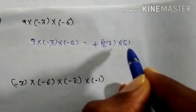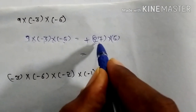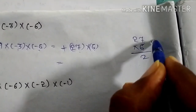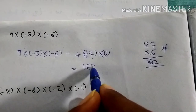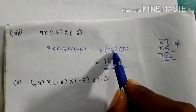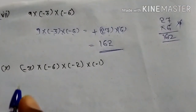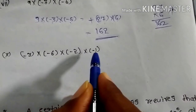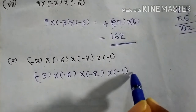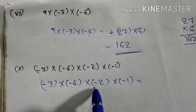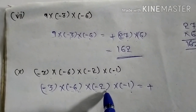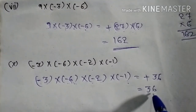Now 27 into 6. Using the basic product method: 27 into 6. 6 times 7 is 42, write 2 carry 4; 6 times 2 is 12, plus 4 is 16. Your answer is plus 162. Wait — the teacher states the answer is 36. Your answer is plus 36.